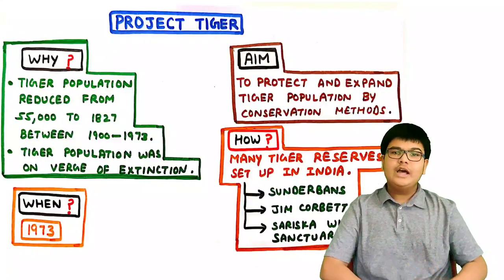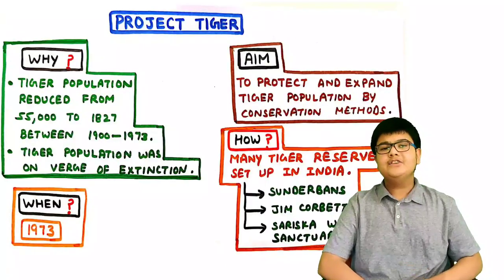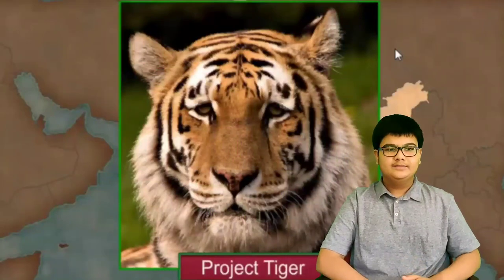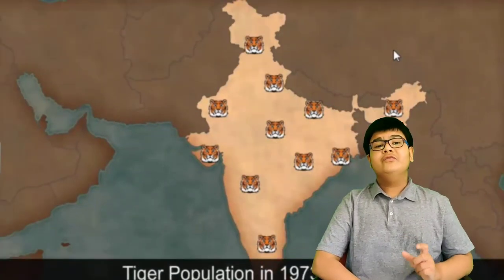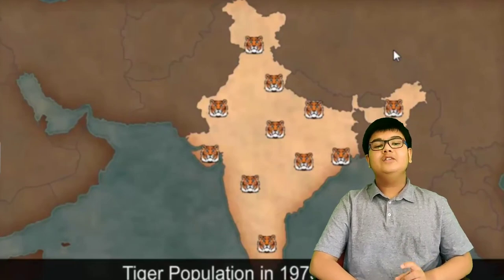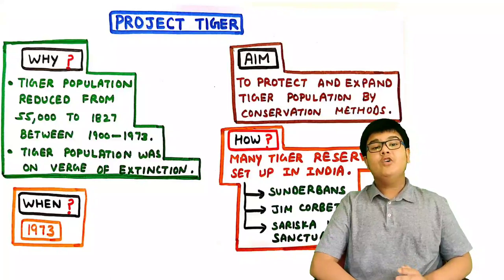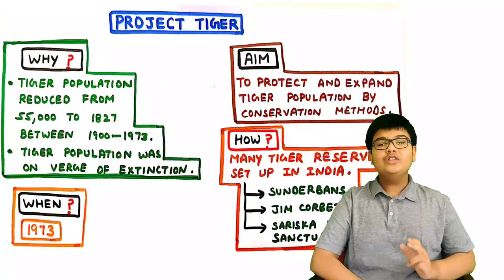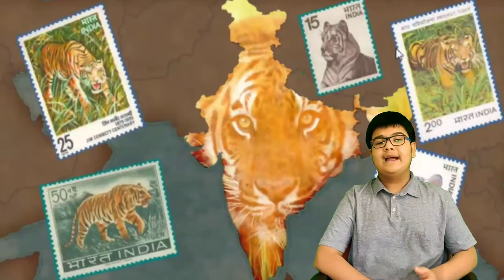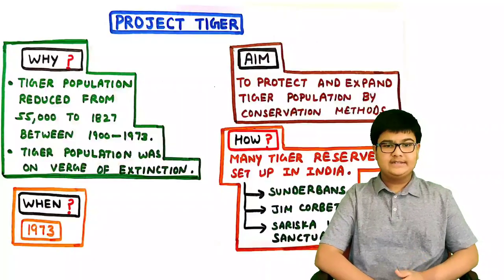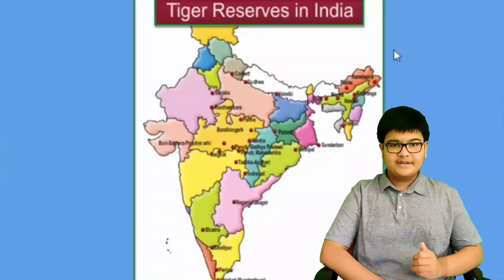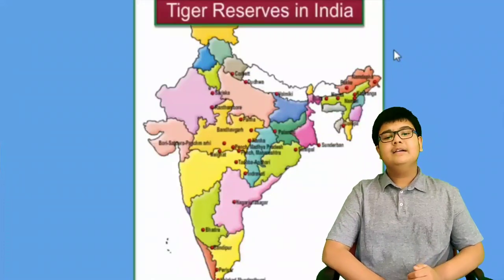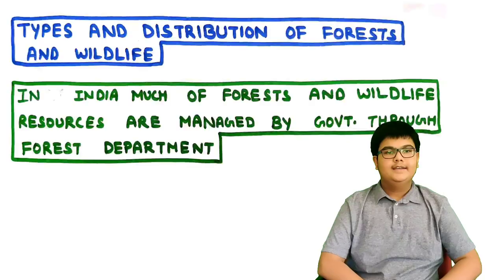Now let us study Project Tiger. The tiger population had reduced from 55,000 to just 1,827 between 1900 and 1973, and the tiger population was on the verge of extinction. Due to this, in 1973 Project Tiger was launched, with the aim to protect and expand tiger population by conservation methods. Many tiger reserves were set up in India, such as Sundarbans reserve, Jim Corbett National Park, and Sariska Wildlife Sanctuary.